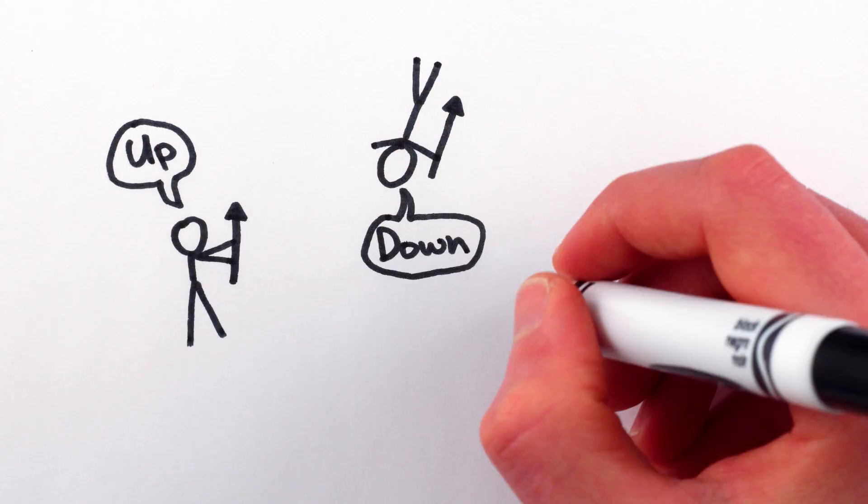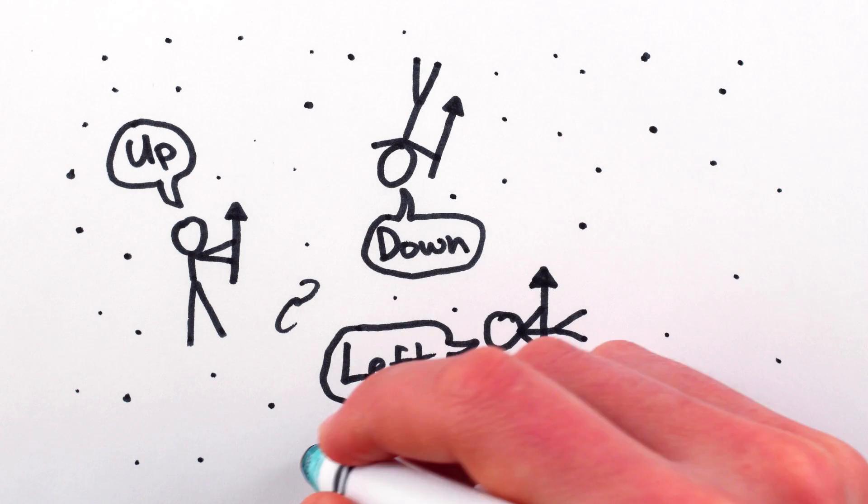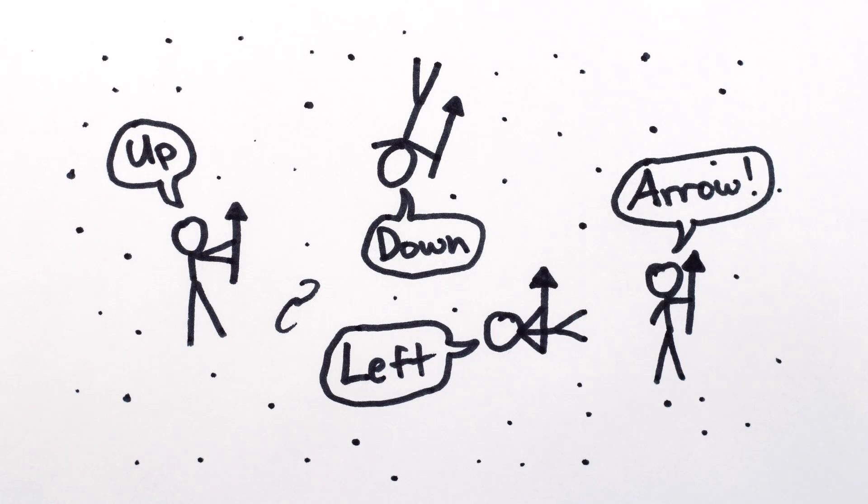In physics and in most science, anything that changes if you change perspective can't be a fundamental property of the universe. Only things that are absolute are considered physical or real.